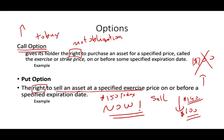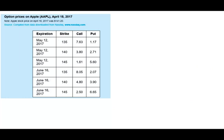Let's look at an actual example with Apple stock. On April 18, 2017, the price of Apple was $141.20. Options are sold in 100-share increments. We'll specifically look at the June 17th expiration with a strike price of $140.